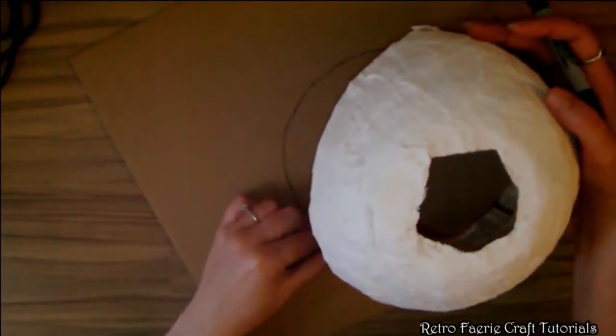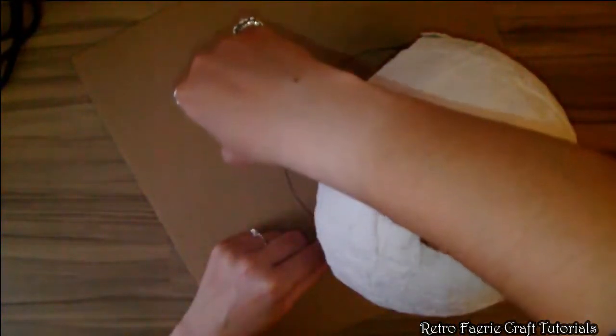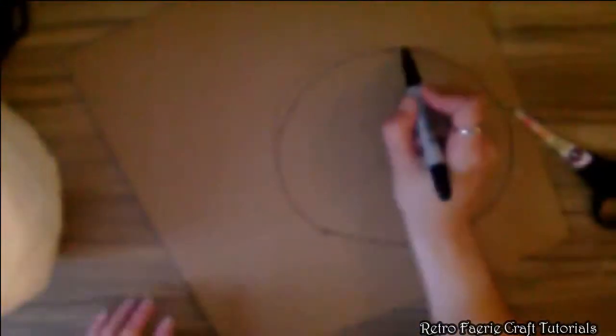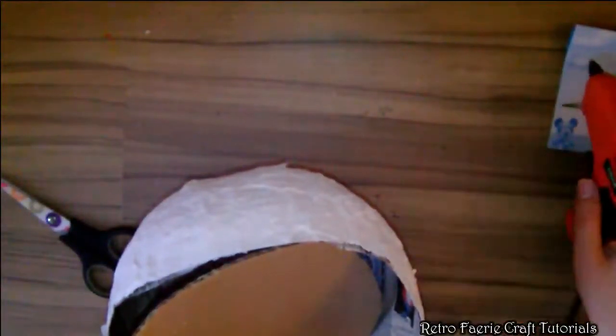You want it to stick out a bit so you can get your hand in there nicely to get those treats. It's not worth having a snack helmet if you can't actually get access to the sweets that easily.